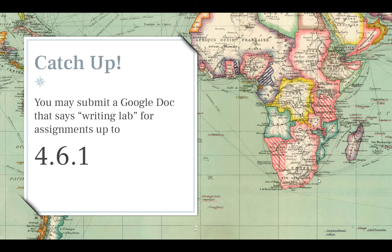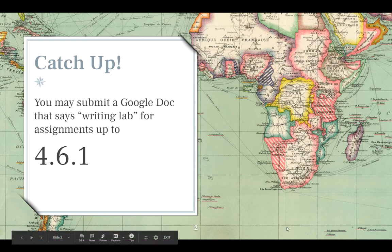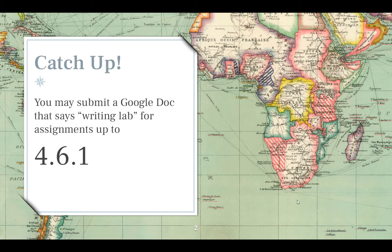Now Isabel, if you have not yet got to 4.6.1, you want to make sure that you get there because that's where you're going to start the written part of this module. Remember that for the writing tasks, those have to come in on the day that they're due because they get assigned as peer reviews to other students in the class. So this goes for anybody else listening to this podcast. What you want to do is create a Google Doc that says Writing Lab on it and go ahead and submit that in module 4 up to assignment 4.6.1.